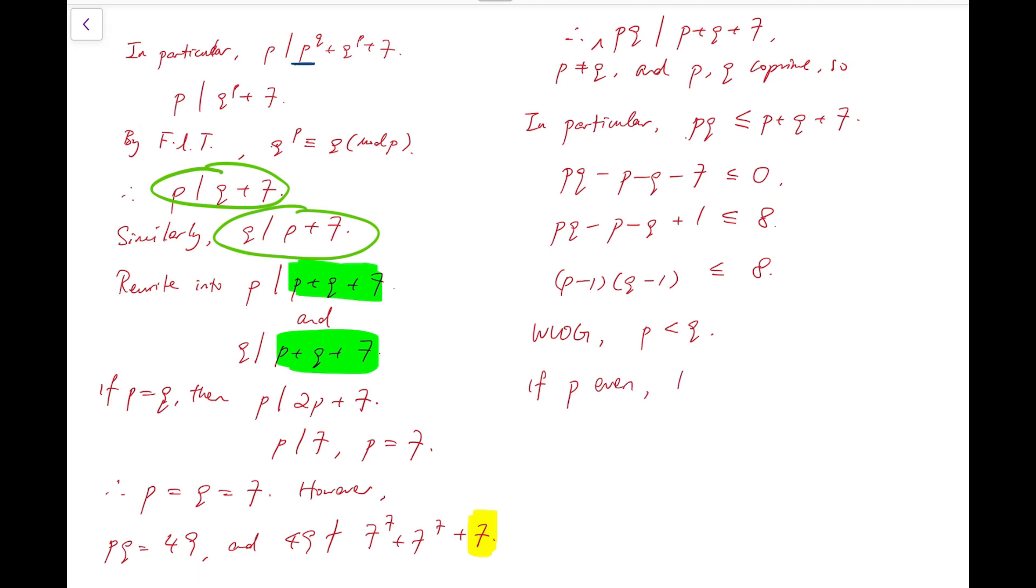If p is even, then we know that p equals 2, and q minus 1 is then less than or equal to 8, because p equals 2 implies p minus 1 is equal to 1. And then, we know that q has to divide p plus 7, which means q divides 9. So therefore, q can only be 3. And now we have some pair of solutions, 2, 3, and 3, 2.